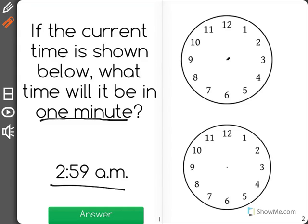First, I'm going to show 2:59 a.m. I know 59 minutes will be close to the 12, but not quite at it, and that if it's 2:59, the hour hand is still in between the 2 and the 3, but it's moving closer towards the 3.